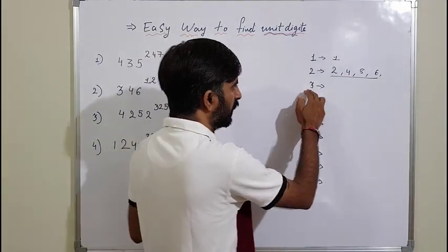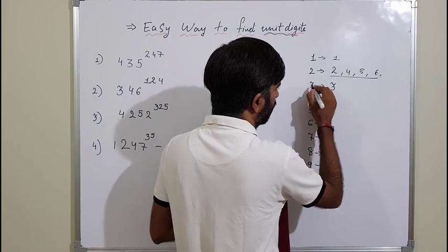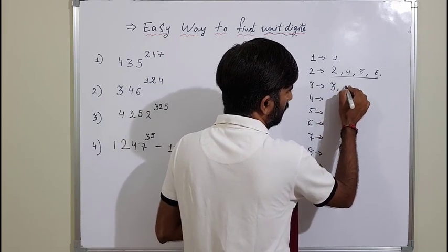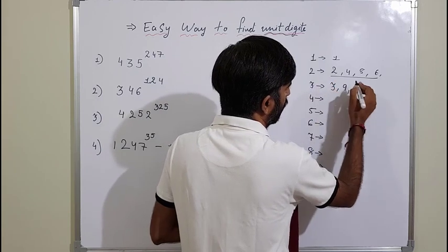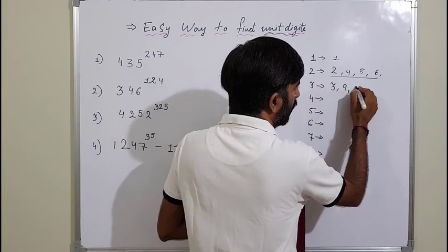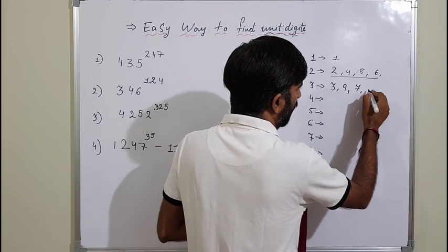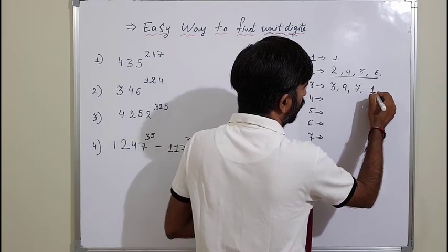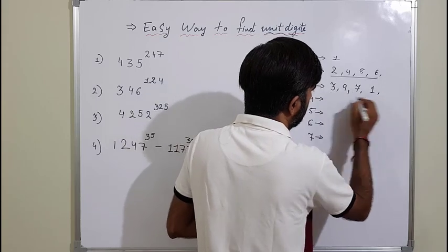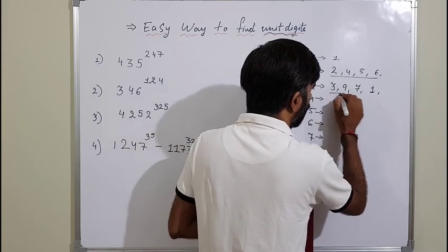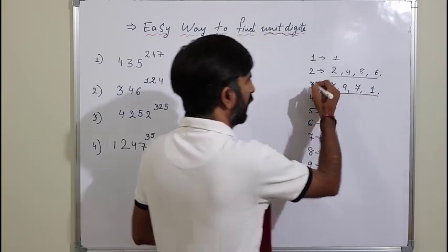For 3: 3 raised to 1 gives unit digit 3, 3 raised to 2 gives unit digit 9, 3 raised to 3 gives unit digit 7, and 3 raised to 4 gives 81 so unit digit is 1. After that, from 3 raised to 5 onward, all these unit digits repeat again.